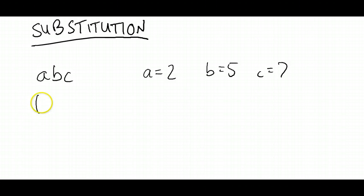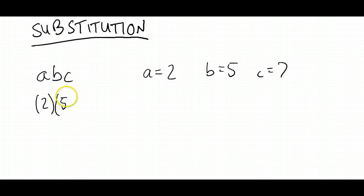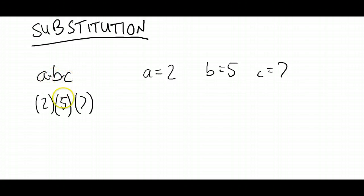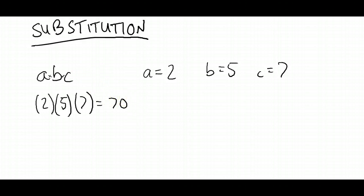When we do that, it's often a good idea to put the numbers in brackets. So we've replaced A with 2, we've substituted A for 2, and we're going to substitute 5 instead of B, and 7 instead of C. Because this was A times B times C — that's what it means when you've got letters next to each other, they're multiplied together — now we've got 2 times 5 times 7. 2 times 5 is 10, and 10 times 7 equals 70. So ABC becomes 70 when these letters have these values.